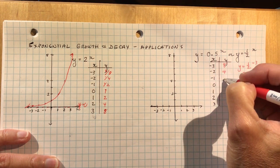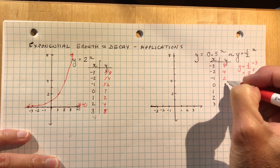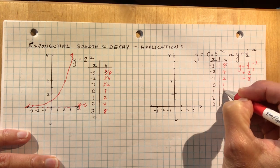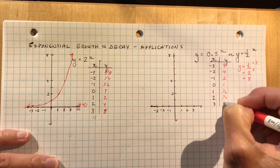So a half to the negative 3 is 8, to the negative 2 is 4, to the negative 1 is 2. And as you can see, this is going backwards from the other one. A half, a quarter, one eighth.